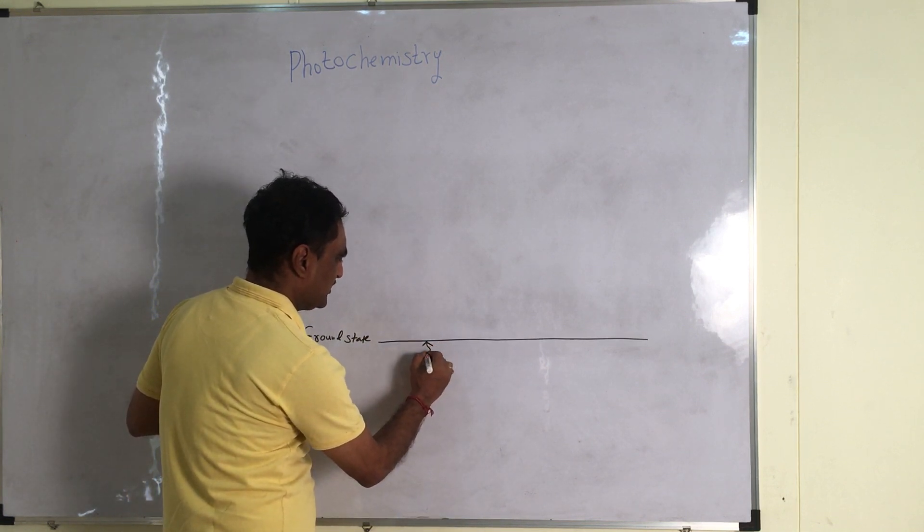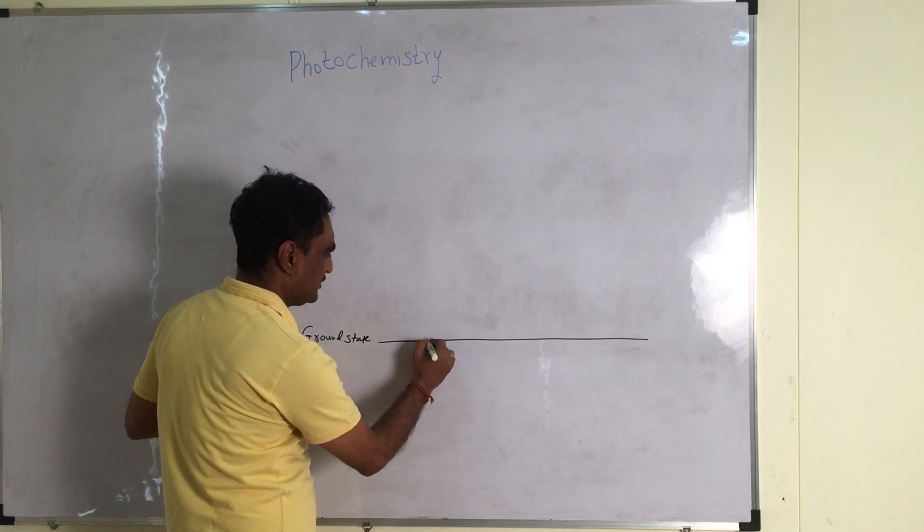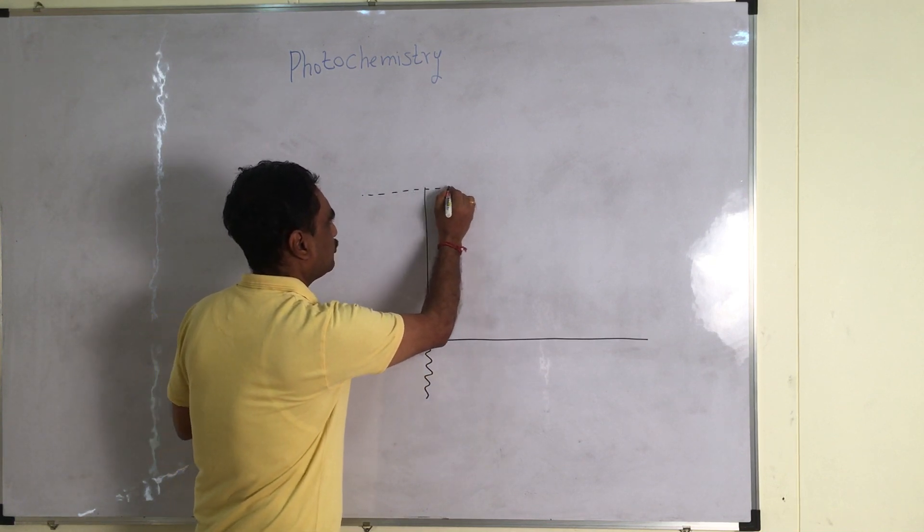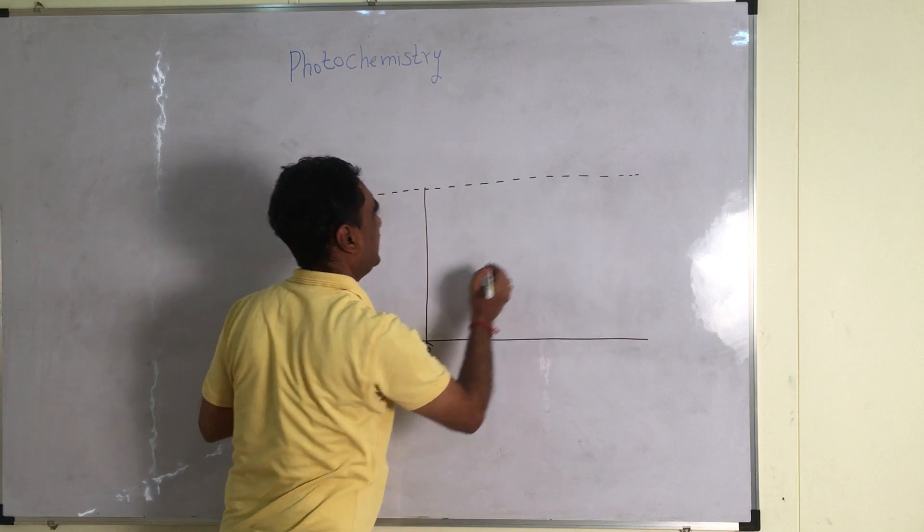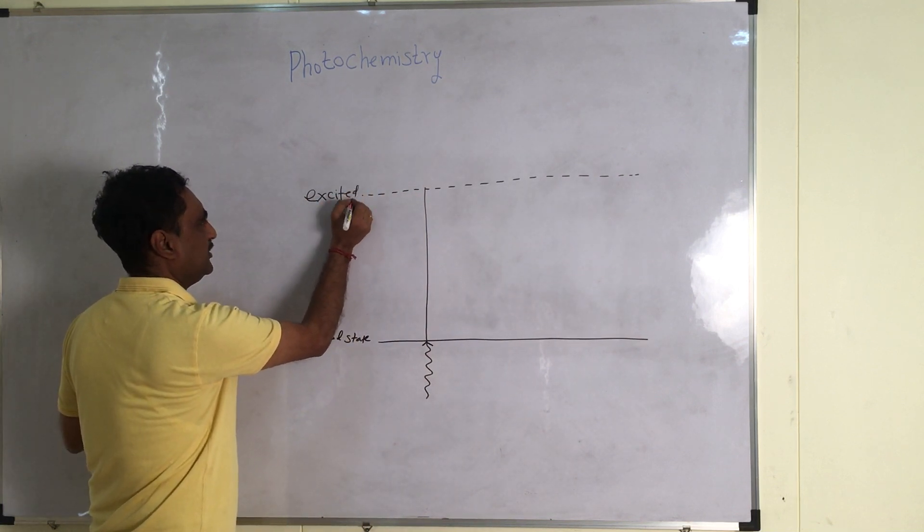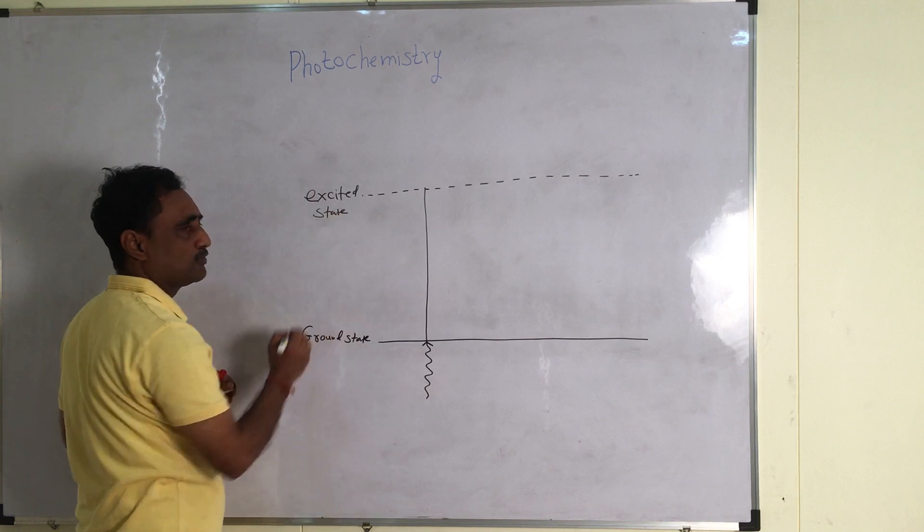And suppose there is a blue light and if blue light is given, then electrons are expelled to one particular level what we call excited state.